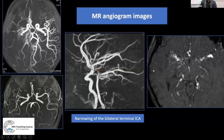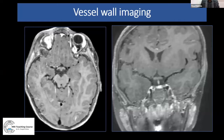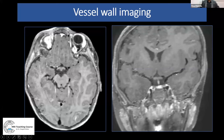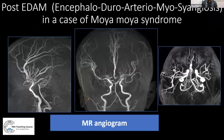Vessel wall imaging was also performed. In vessel wall imaging, fat-sat or FLAIR images are used post-contrast to look for enhancement along vessel walls — not the lumen — which helps rule in or rule out infective or inflammatory vasculitis as compared to genetic conditions. In this case, vessel wall imaging showed no abnormal enhancement along the vessel walls, making an inflammatory cause less likely for this Moyamoya syndrome case.